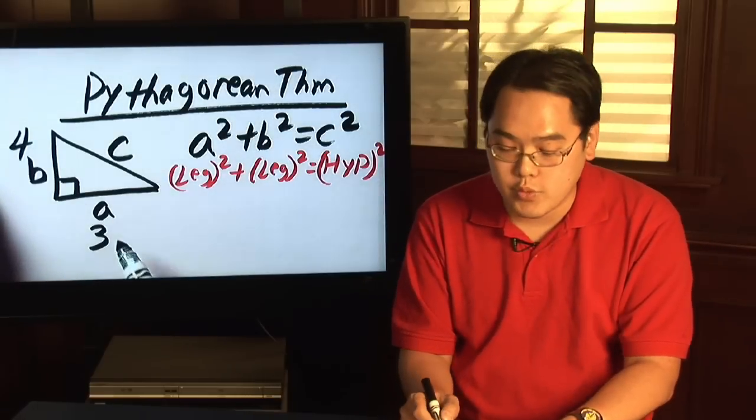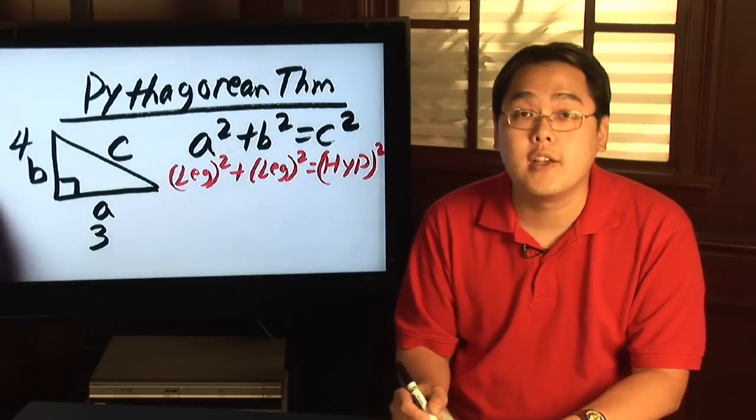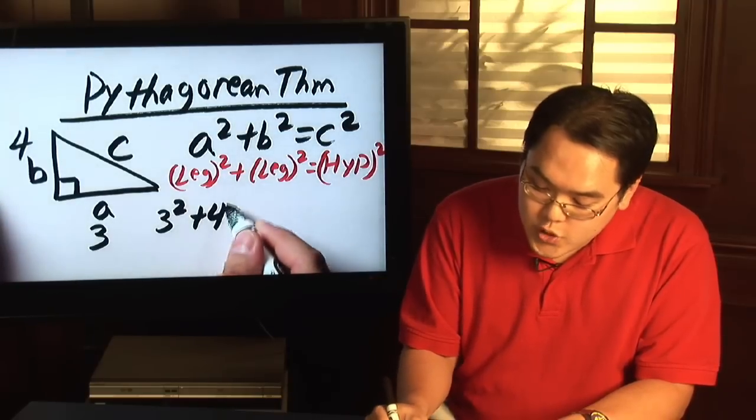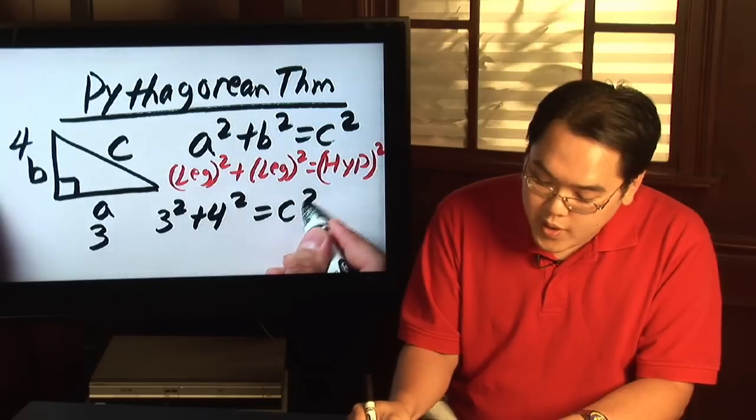What you would do is just plug in those numbers into the Pythagorean Theorem and this is what you have: 3 squared plus 4 squared equals C squared.